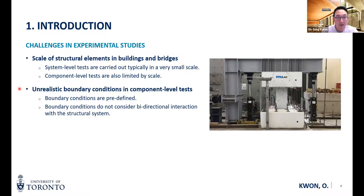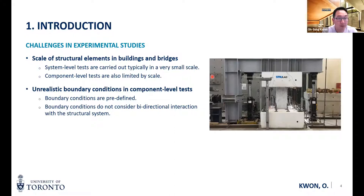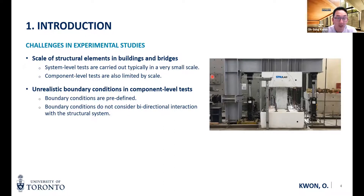When you do component level tests, there are limitations in boundary conditions as well. We assume that the component is part of the system and somehow idealize the applied load and applied boundary conditions to the specimen. So this type of prescribed motion or prescribed displacement history does not consider bidirectional interaction with the rest of the structural system. We can understand component behavior well, but it is hard to understand how this component will behave in a structural system, or how the structural system will behave due to the behavior of the tested specimen.